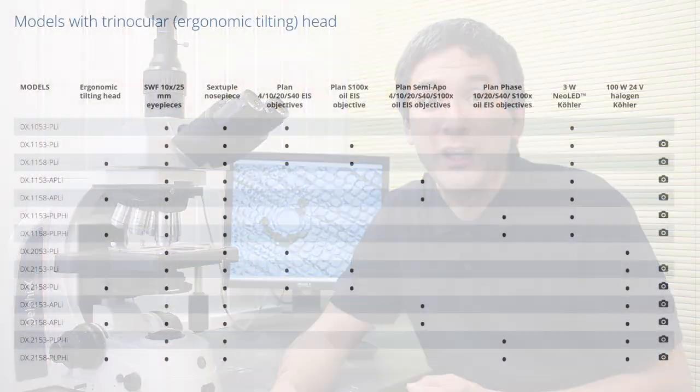So the Delphi X microscope does come in different versions. This model over here, for example, has an LED light and it's also available with halogen. Here we have all the plan objectives. All Delphi X microscopes are infinity-corrected objectives. But here we've got plan semi-apochromatic objectives. But for routine laboratory use, you can also get plan achromatic objectives and even phase contrast objectives are available. The website of the company provides all of the different variations.